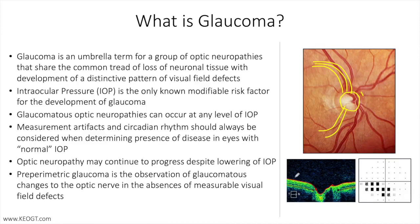This is the optic nerve, and you can see the cup of the optic nerve here, and these are vessels. For the residents out there, you can tell that this is the right optic nerve horizontal scan by looking at where the vessels are on the right side for the right nerve. Also, the thicker RNFL going towards the macula shows you that the macula is on the left, and this is a right eye scan.